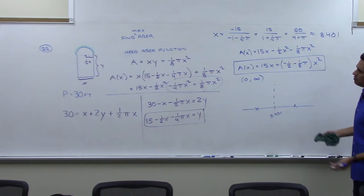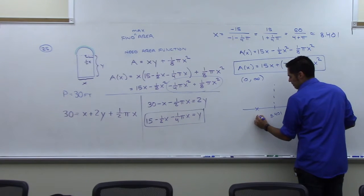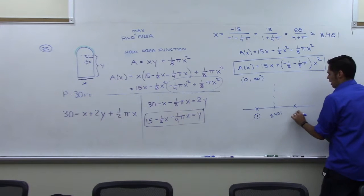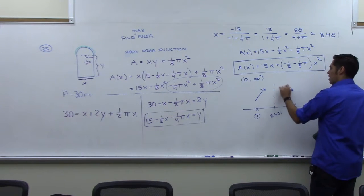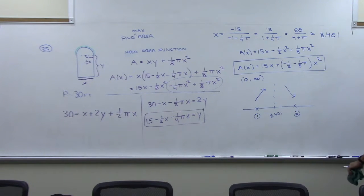I erased the derivative. But you could plug some numbers in, like 1, let's say 10, and you'll get that it goes up and down. So that means we have the only maximum we have is at 8.401.